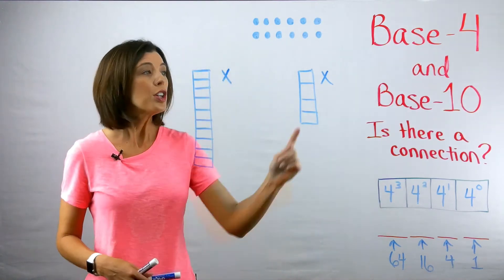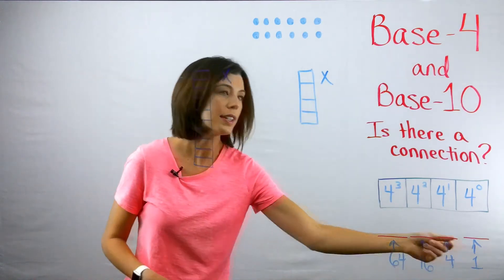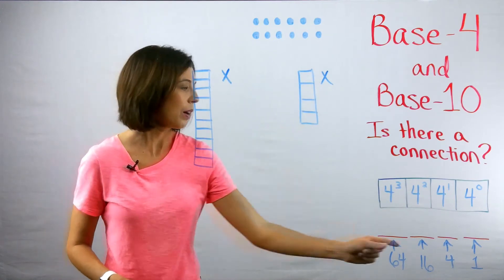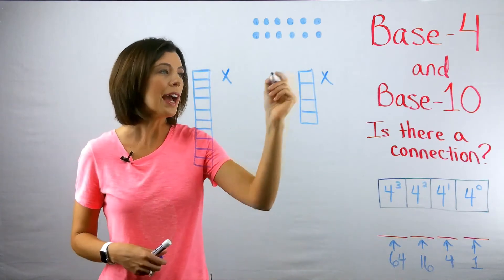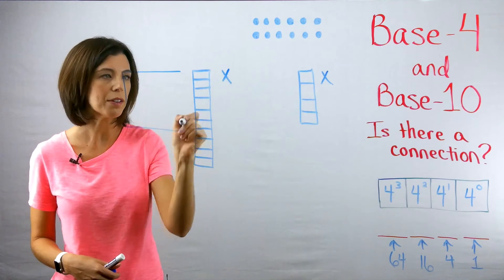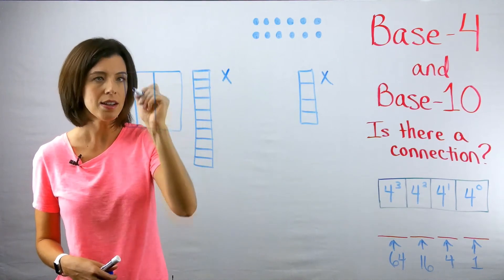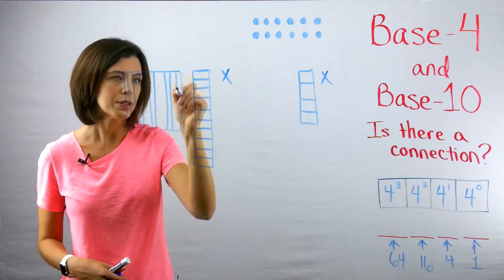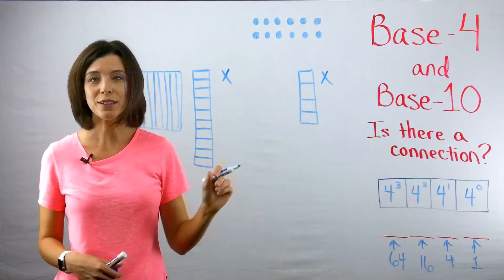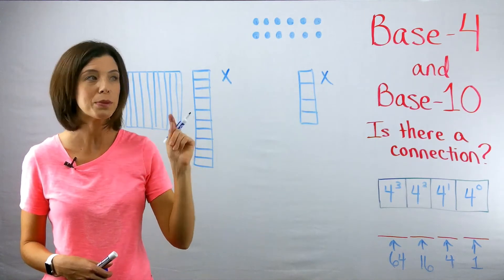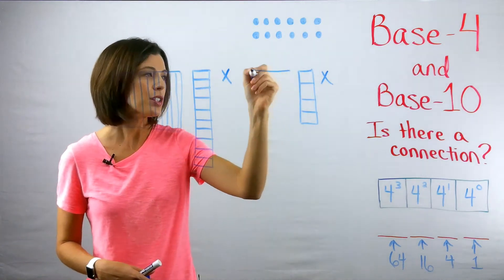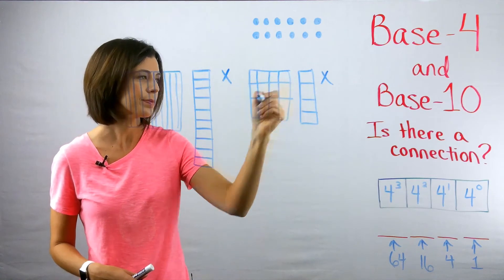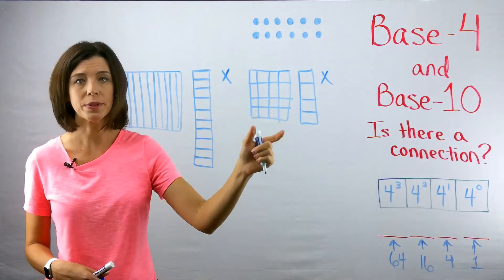So this represents our ones place still. This represents our fours place — not our tens place. Then instead of a flat having 10 rods like in base 10, in base four a flat has four groups of four, which is 16. So a flat in this case literally looks like a 4-by-4 arrangement — hence why we say groups of 16.